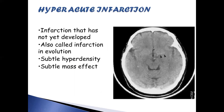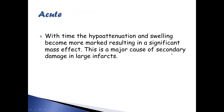Hyperacute infarction — where the infarction has not yet fully developed — is also called infarction in evolution. There will be a certain hyperdensity and mass effect. In the acute phase, the hypoattenuation and swelling become more marked, resulting in a significant mass effect.